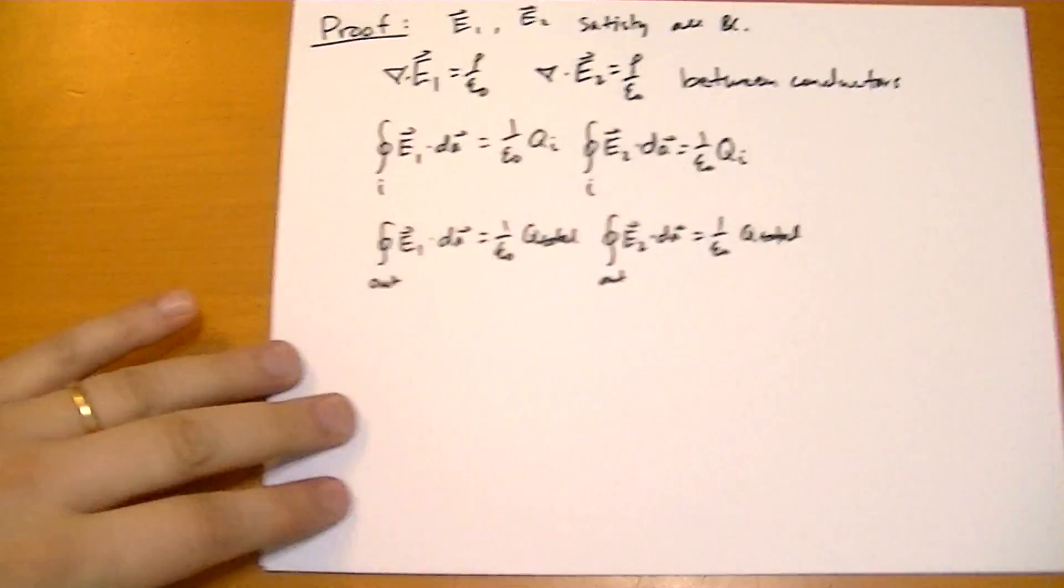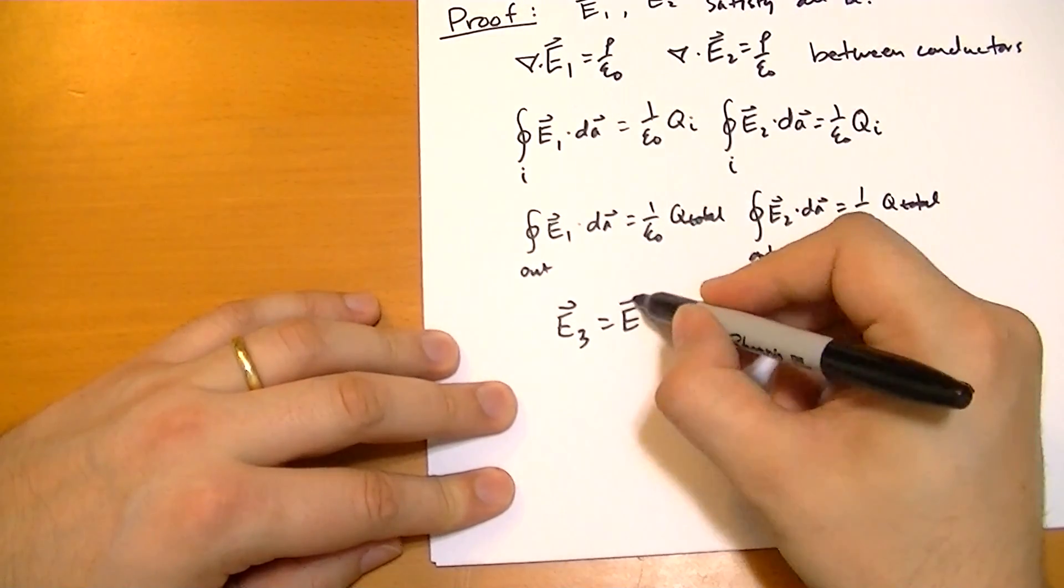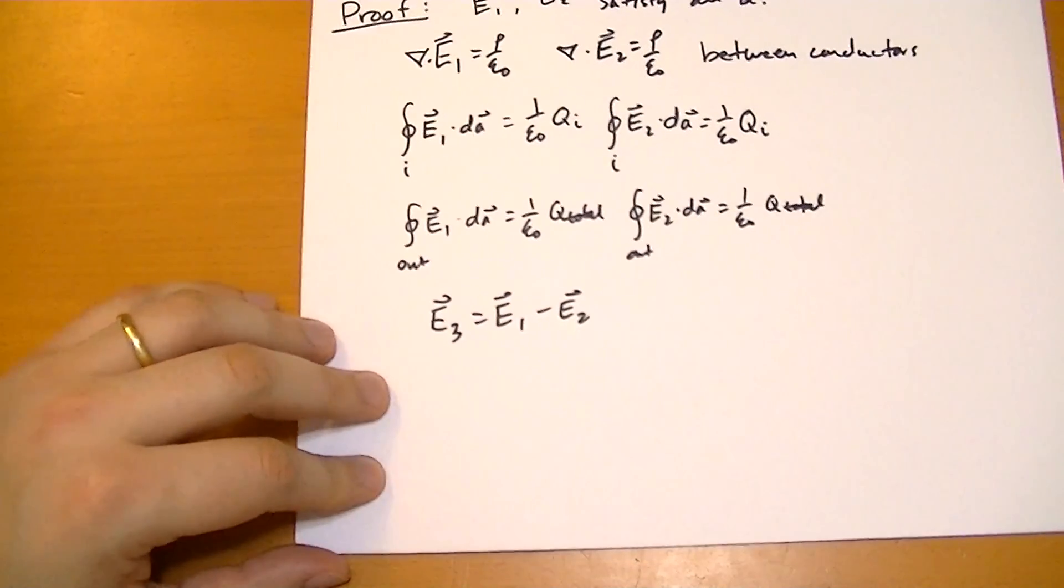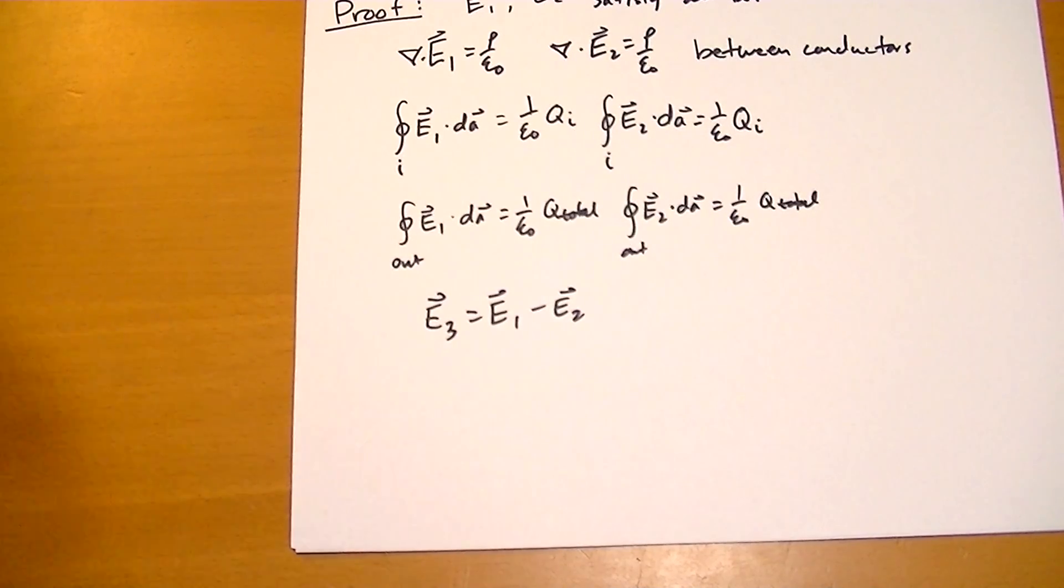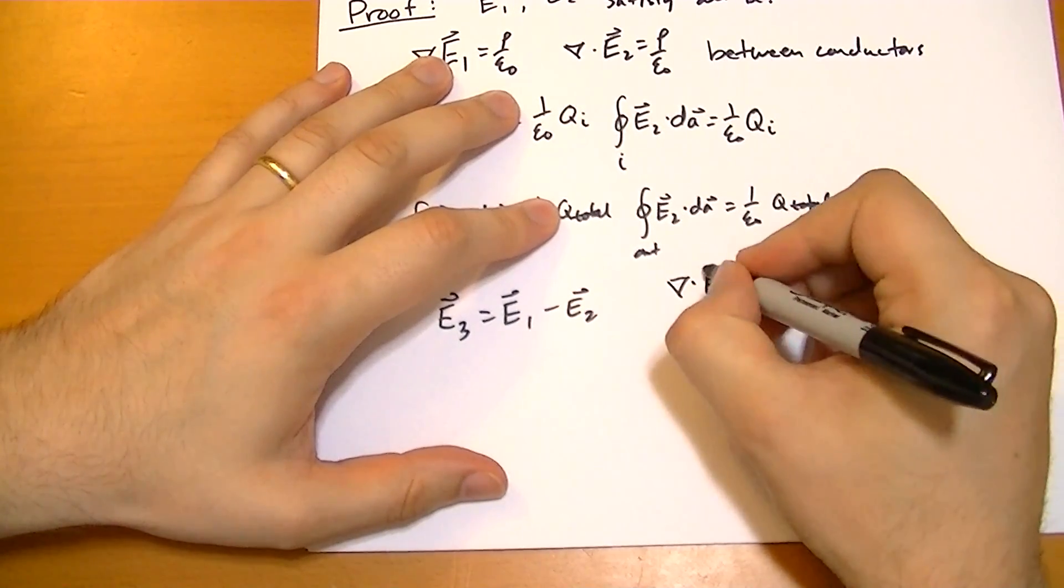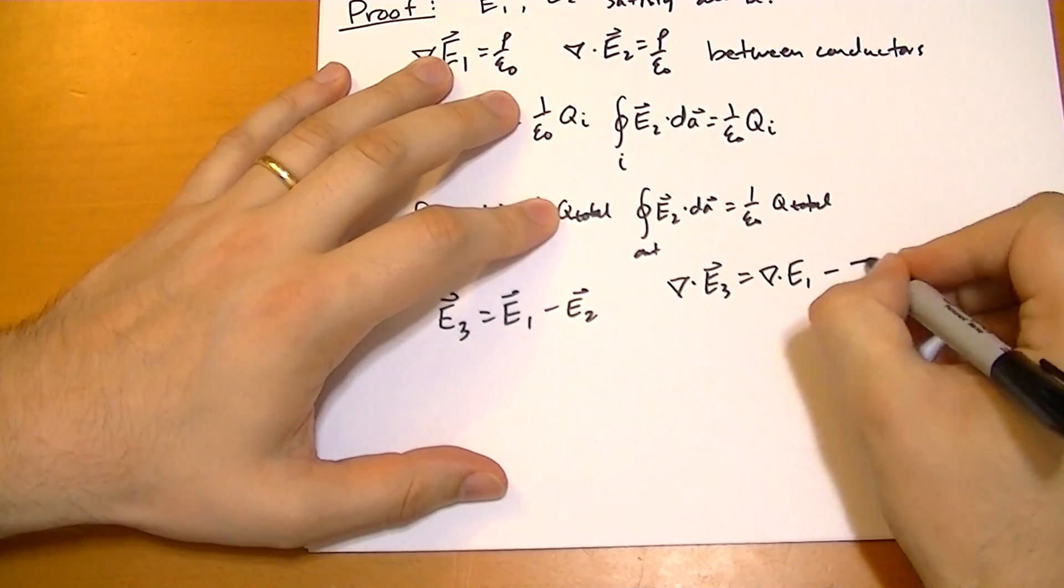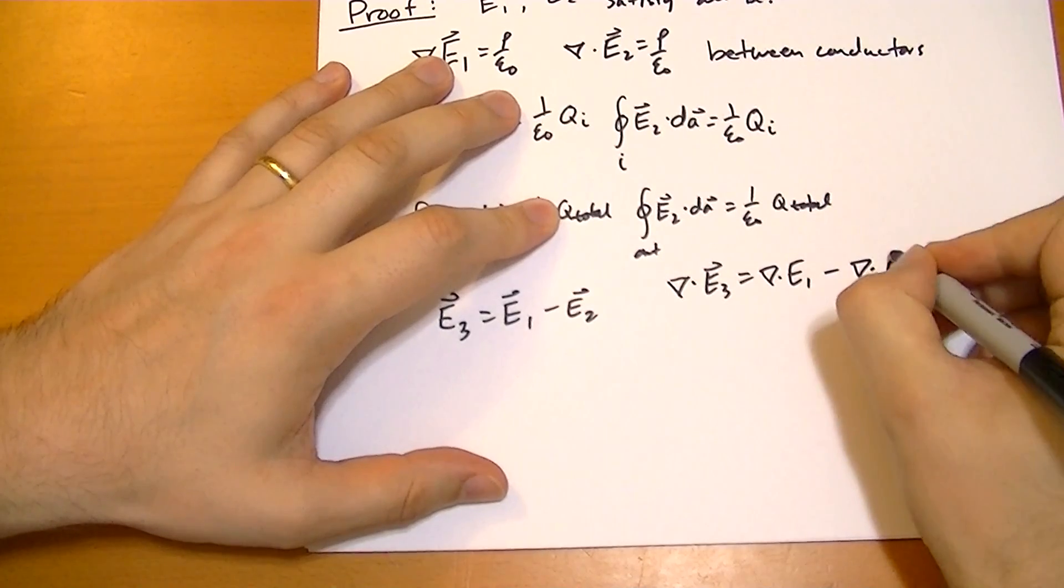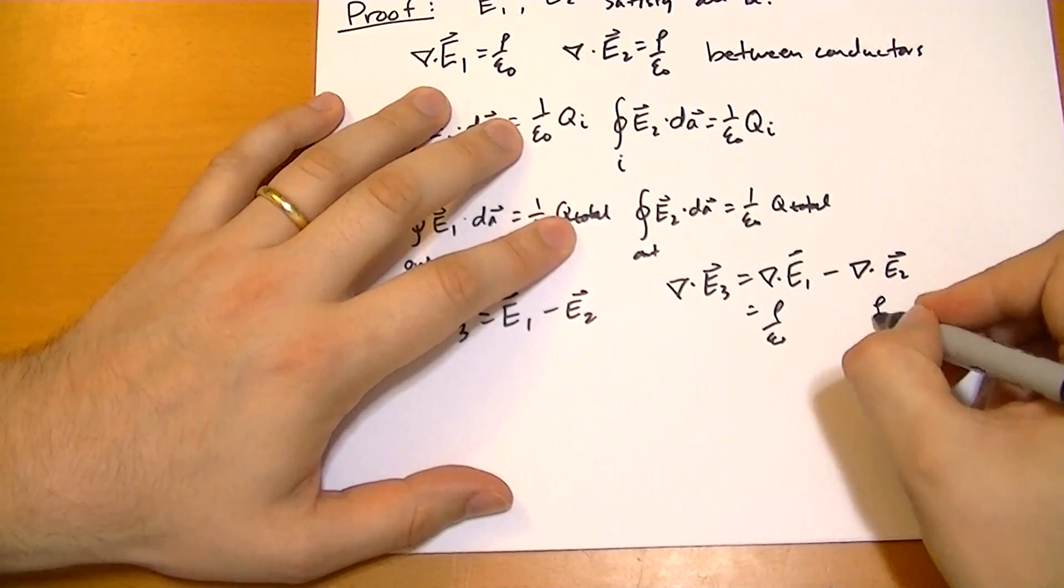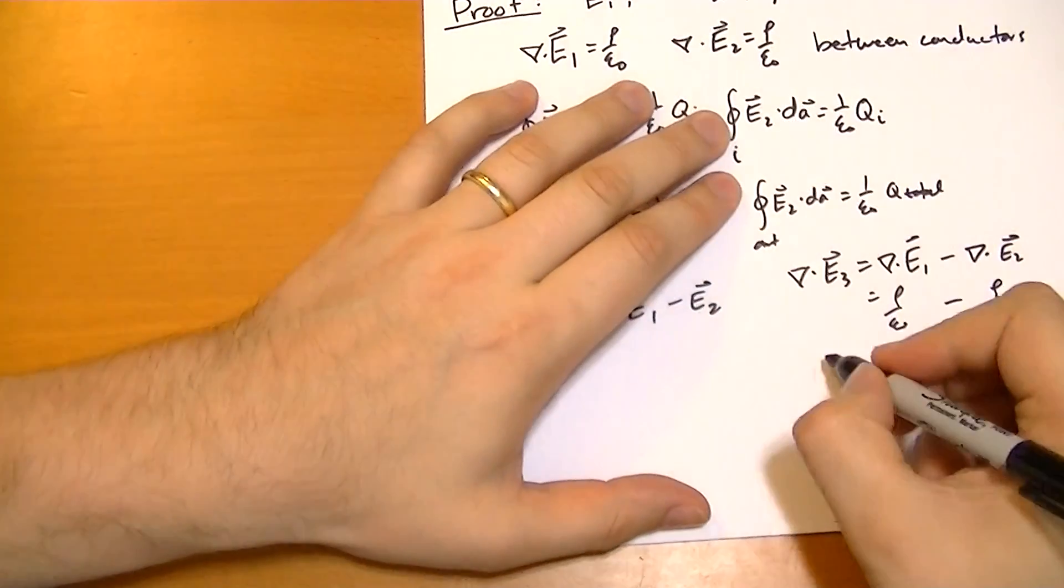So let's look at, we're going to invent this E3 field, just like we've done for the potentials. And this is going to equal the difference between the two fields. And if they turn out to be the same, we're going to find that E3 is equal to zero. So the divergence of E3, that's just equal to the divergence of E1 minus the divergence of E2. And since they're both equal to rho over epsilon naught, and we're subtracting, then the divergence of E3 is zero. That's going to be important.